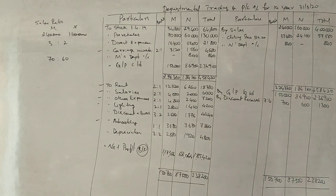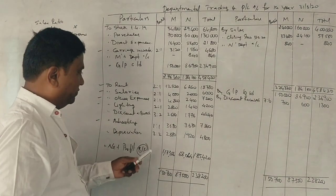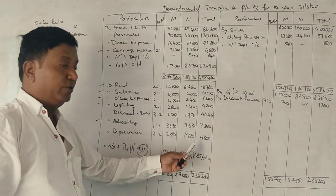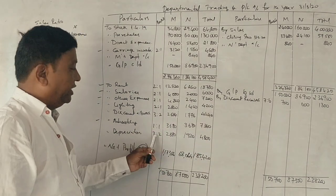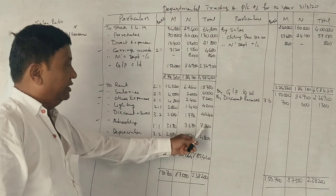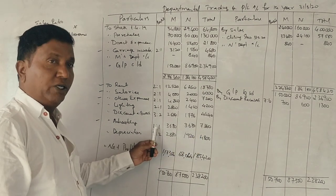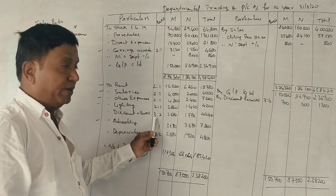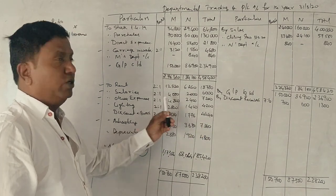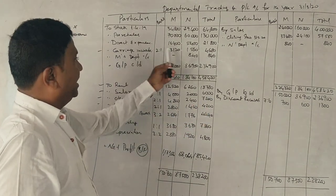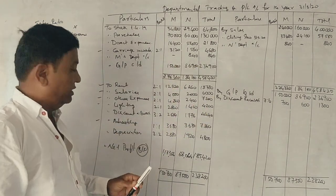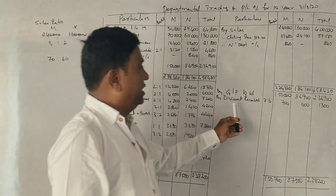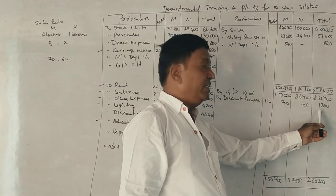This is the same as 3:2 ratio. So carriage inwards is 2:1, advertisement is 1:1, depreciation is 3:2. Depreciation of 4,800 is split: 4,800 × 3/5 and 4,800 × 2/5. Similarly, other figures use their respective ratios — 2/3 and 1/3, or 3/5 and 1/5. This gives us a ratio of 7:6 for purchase-based allocations.